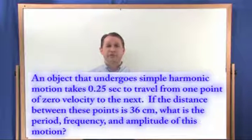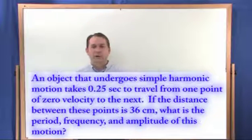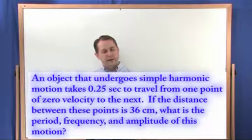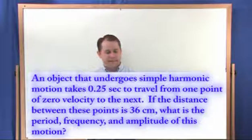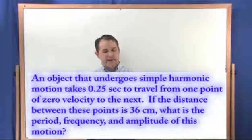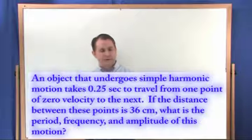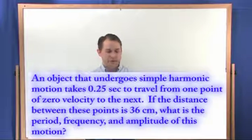An object undergoing simple harmonic motion takes 0.25 seconds to travel from one point of zero velocity to the next. If the distance between the points is 36 centimeters, calculate the period, the frequency, and the amplitude of this motion.